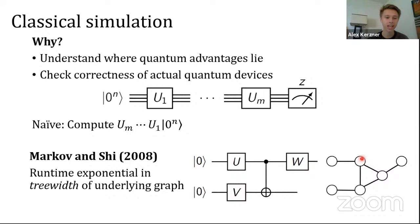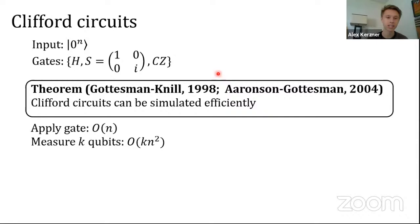We'd like to combine this idea with known techniques for Clifford simulation. In a Clifford circuit, you're allowed to input the all-zero state and apply gates only from this limited gate set: Hadamard, S, and controlled-Z. Gottesman-Knill and then Aaronson-Gottesman later showed that Clifford circuits can be simulated efficiently.